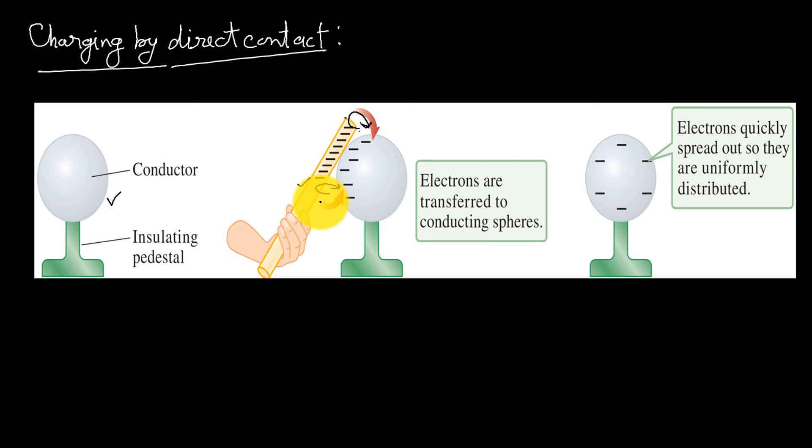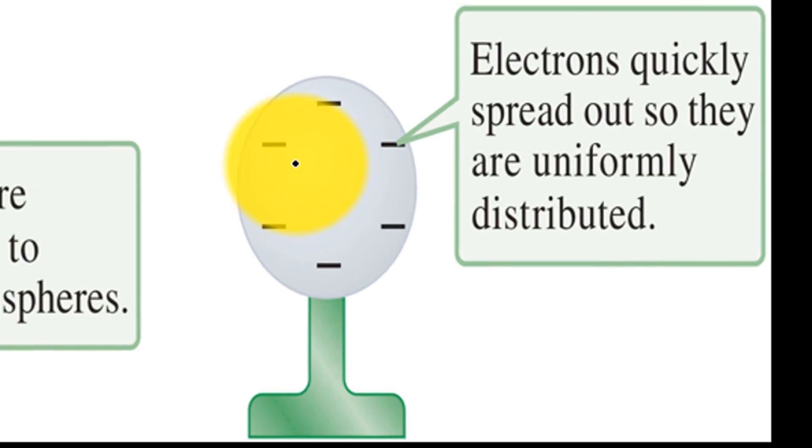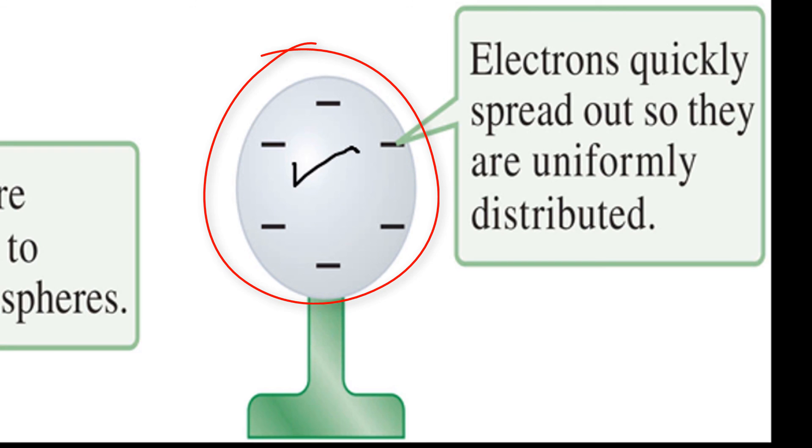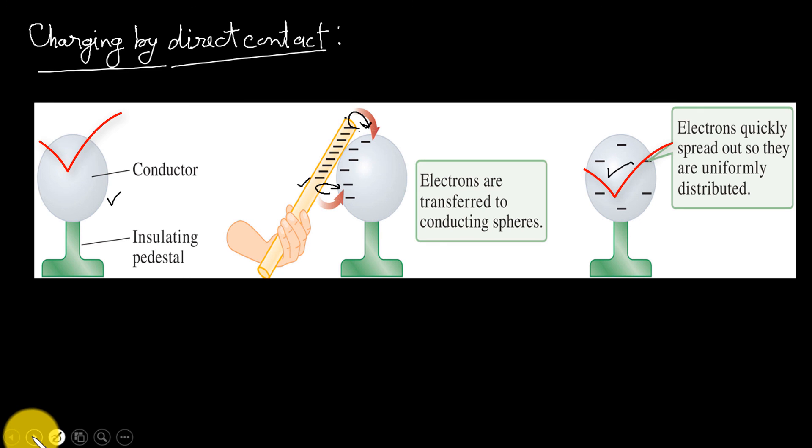Because electrons move freely throughout the conductor and because like charges repel, the electrons quickly redistribute themselves in the conductor moving as far apart as possible. For a spherical conductor, as far apart as possible means that the electrons are uniformly distributed on the outside surface of the sphere. If you try to charge a conductor of another shape, the charge is again distributed on the outside surface, although for non-spherical shapes the charge distribution is not uniform. Here in this case, the uncharged body acquires the same sign of charge as the charged body. The total charge is distributed between the two bodies.